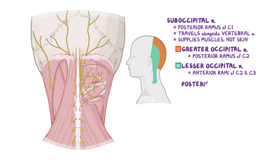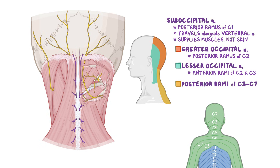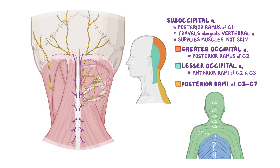Lastly, the posterior rami of spinal nerves C3 to C7 supply the intrinsic muscles of the back in the cervical region and the skin that covers them next to the vertebral column. The skin of the rest of the back is innervated segmentally by the posterior rami of the thoracic and lumbar spinal nerves.